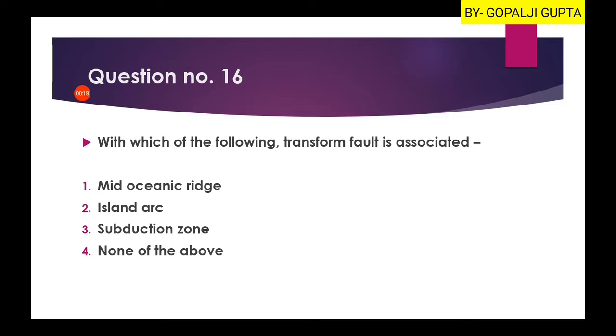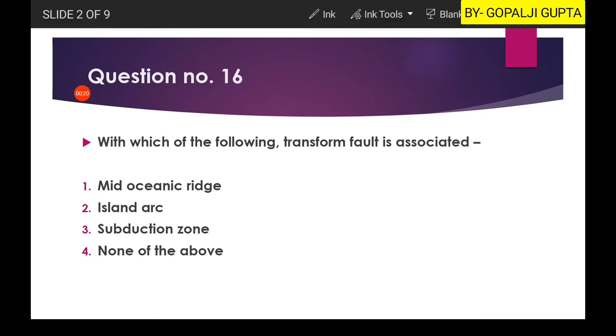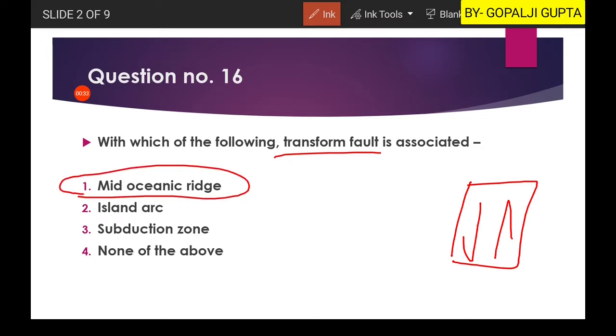In a transform fault you have forces which are parallel and in the opposite direction, and these faults are found along the mid-oceanic ridges. Now you can say that in the mid-oceanic ridges we have the divergent plate boundaries, then how is it possible?